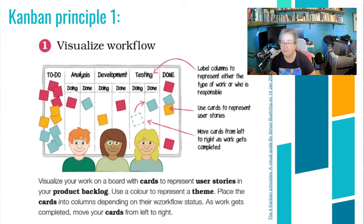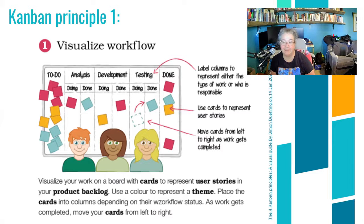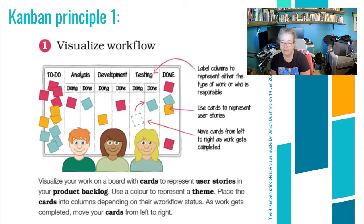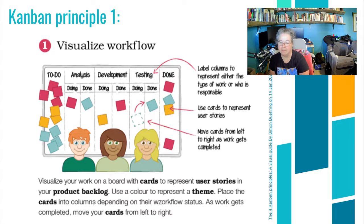Once you label those columns, they represent either the type of work or who's responsible for the work. Cards are talked about as stories, bringing in that empathy piece of design thinking where you're thinking about the end user and how your product or deliverable will help improve quality for that user story. We will move Kanban cards from left to right as we read, so that work gets completed along a timeline, and everybody on the project team has the ability to create these little cards and also move them around. Once we visualize this work, we can use color to represent a theme and place the cards into columns depending on their workflow status.